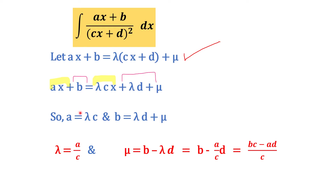Now equate the x terms. The x terms give: ax = λcx, so x gets cancelled and you are left with a = λc. For the rest of the terms, equate b to λd + μ. So b = λd + μ.